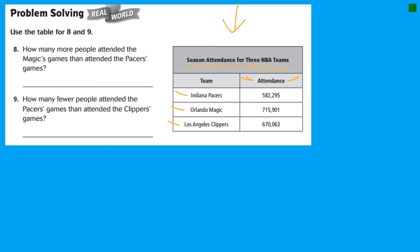So this is for the whole season, though. So for the Indiana Pacers, 582,295 people came for the season. For the Magic, 715,901 people came. The Clippers, 670,063 people came.